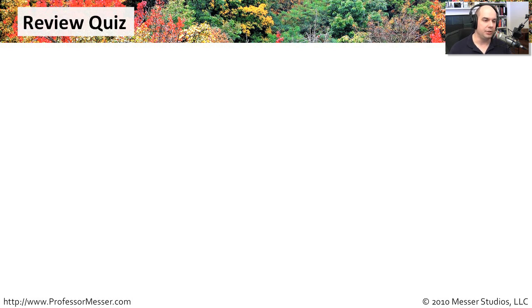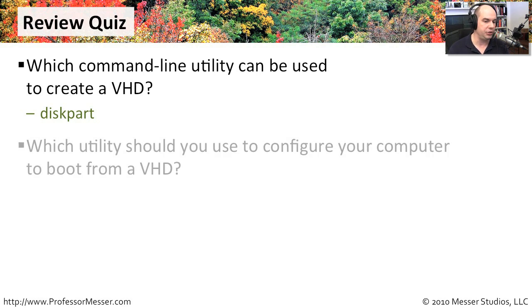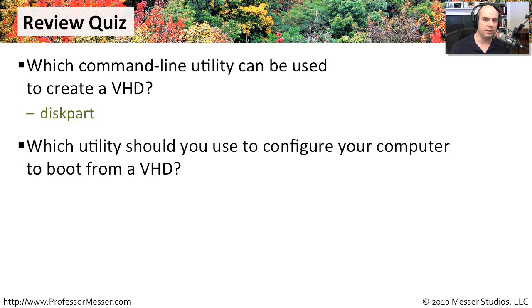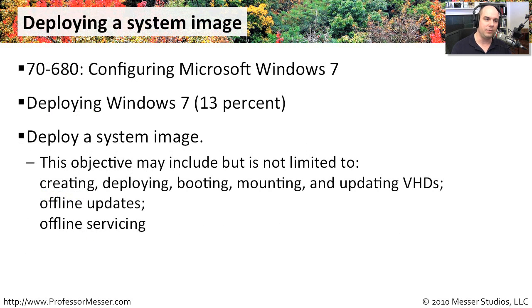Let's review some topics from this module. First: which command line utility can be used to create a VHD? We used diskpart — remember, you need an elevated prompt to use diskpart to make a VHD file. Second: which utility should you use to configure your computer to boot from a VHD? That is BCDEdit, which allowed us to modify the boot manager entries. Third: which utility allows you to apply a WIM to a VHD? We used ImageX, applying that WIM image into a VHD file. That covers everything for your exam on creating, deploying, booting, mounting, and updating VHDs, including offline updates and offline servicing — very handy for your 70-680 exam.